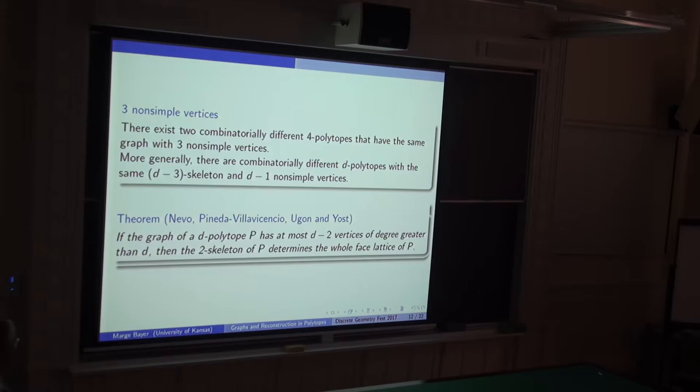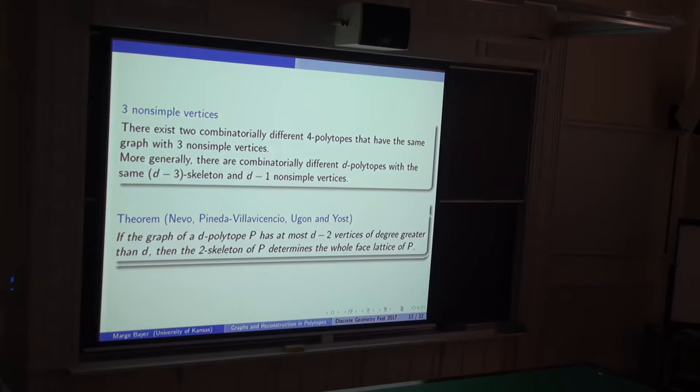Going up to three non-simple vertices, the theorem cannot be extended. It is not hard to produce two combinatorially different 4-polytopes with the same graph where the graph has three non-simple vertices, and once you have that, you can boost it to higher dimensions. In general, for d ≥ 4, there are combinatorially different d-polytopes with the same (d−3)-skeleton and d−1 non-simple vertices. It was also shown that if the graph of a d-polytope has at most d−2 vertices of degree greater than d, then the 2-skeleton of P determines the whole face lattice.